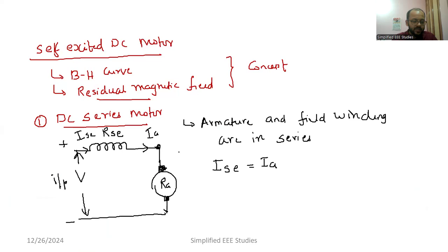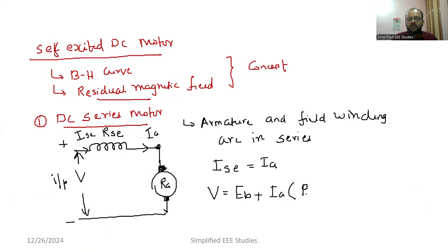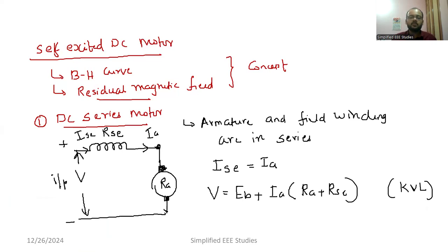Applying KVL, the equation for terminal voltage in a series motor is: V = EB + IA × (RI + RSE), because it forms a series circuit. You have to apply KVL to get this equation. V = EB + IA × RI is the simplified form you should understand.